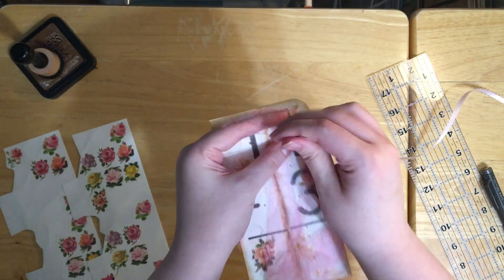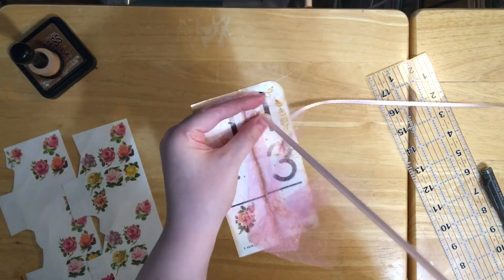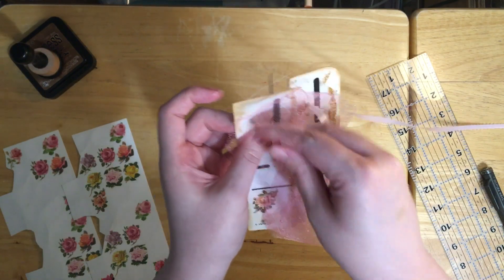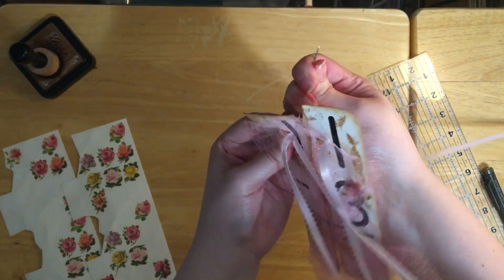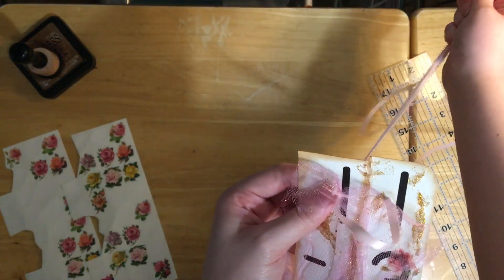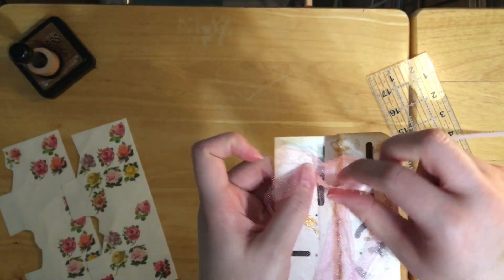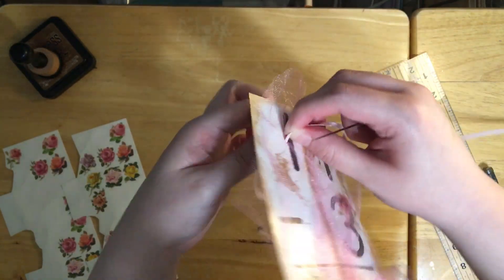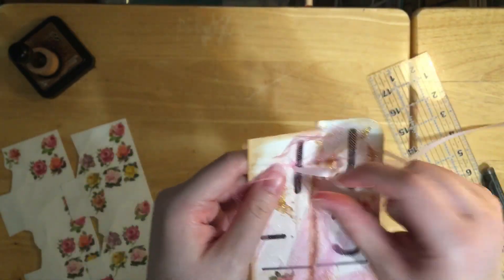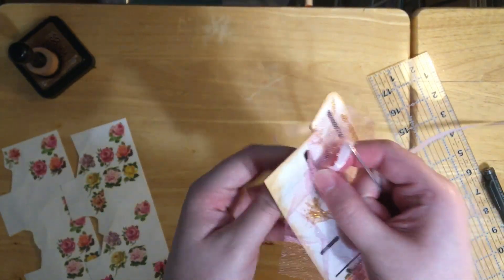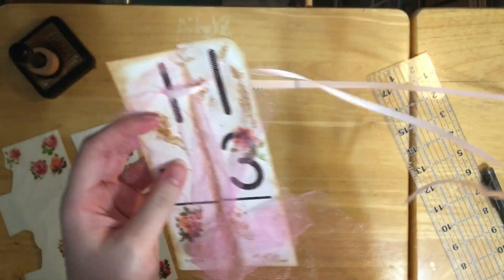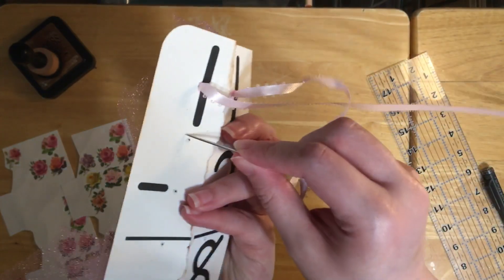I'm gonna take this and start this way, going into the first hole. This is a bit of a challenge just pulling the ribbon through. Then we're gonna go into the one to the left, the top hole to the left, and pull the ribbon back through.